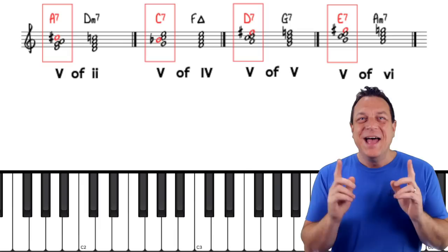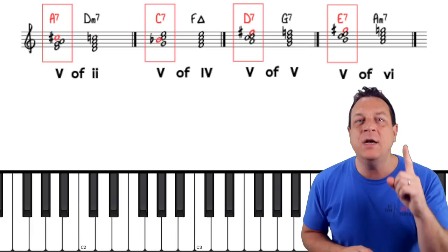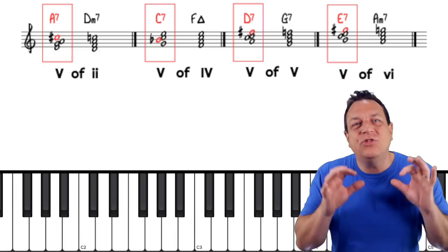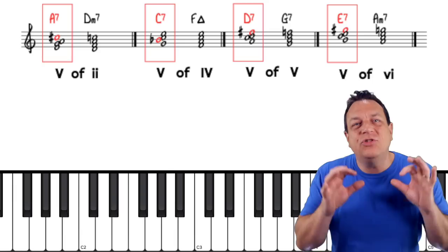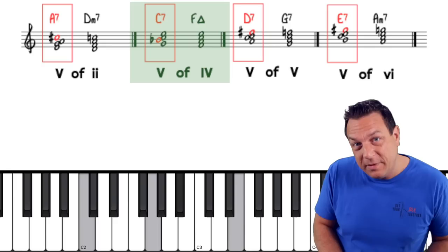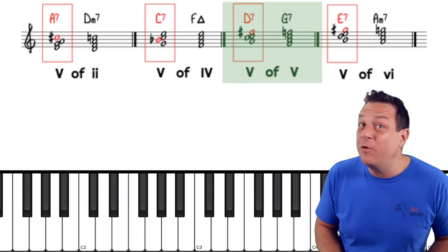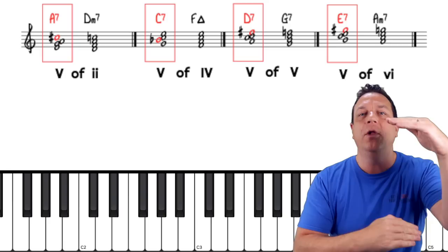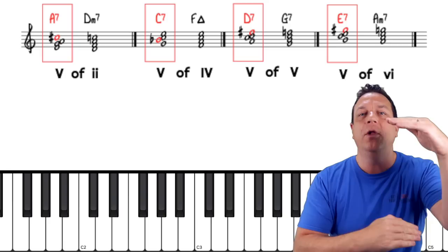Learn the chord tones for all the main chord types, then keep transcribing solos and developing your ear. My final comment: if you only play one note over a secondary dominant, make sure it's that sticky-outy note. If you're in C and you've got the five of six — an E7 — pick out that G sharp. If you're going to chord four with a C7, pick out the B flat. For the five of five — a D7 — pick out that F sharp. And for the five of two — an A7 in C — pick out that C sharp. Pick out that one spicy note and you will instantly rise above the crowd.